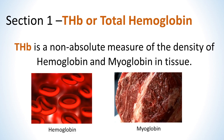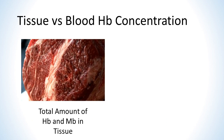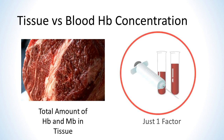Recall from the SMO2 lesson that hemoglobin is in the red blood cells and myoglobin is in the muscle tissue. It's very important to distinguish between total hemoglobin and blood hemoglobin concentrations. Total hemoglobin measures the amount of hemoglobin and myoglobin per unit volume of tissue, whereas blood hemoglobin concentration measures the amount of hemoglobin per unit volume of blood. Higher or lower blood hemoglobin concentrations is just one factor that can contribute to higher or lower THB.